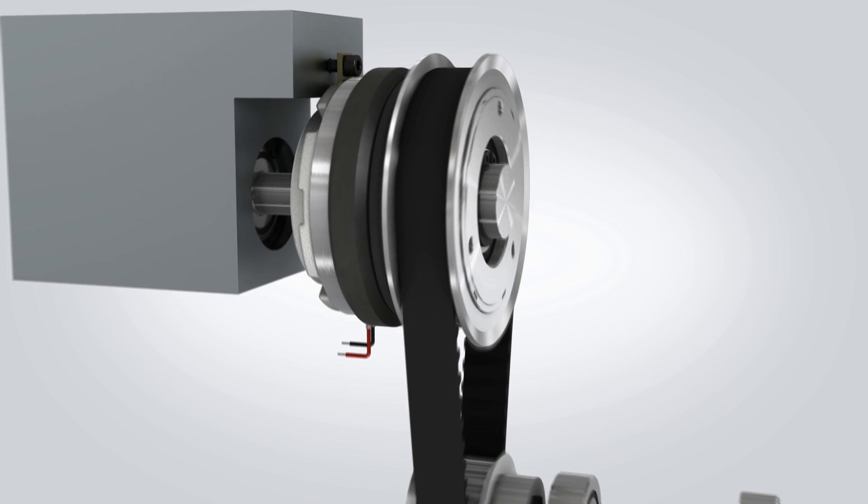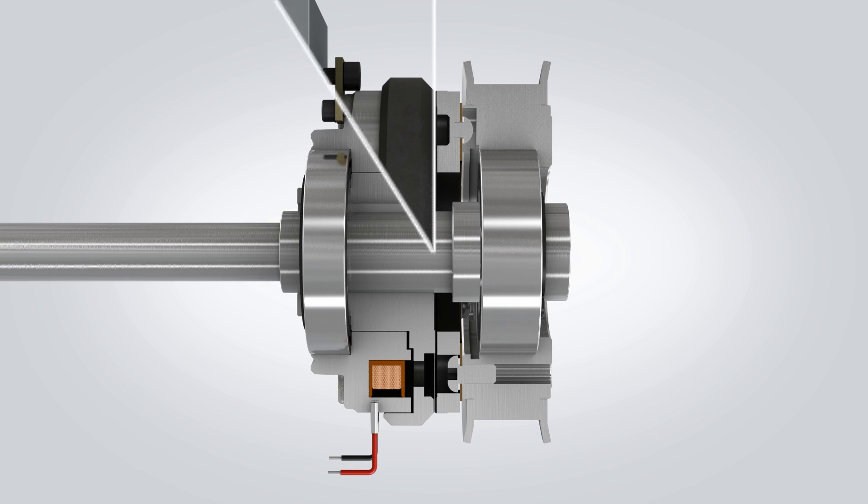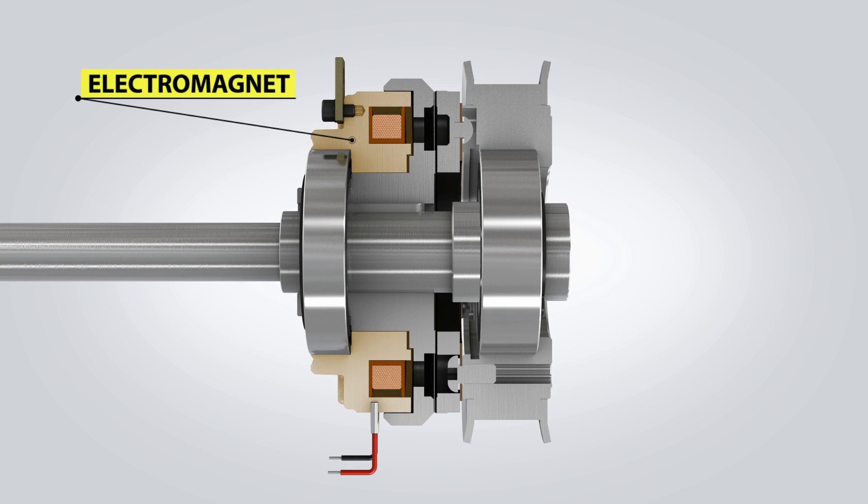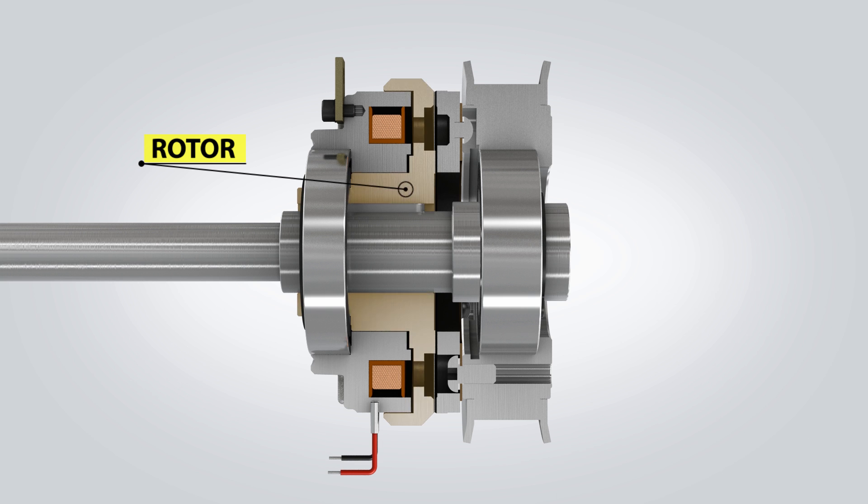First, let's get acquainted with the main clutch components. The primary drive shaft typically contains a stationary electromagnet which is fixed with a flange or torque tab. A rotor is fixed to the primary driving shaft with a key or other connection.